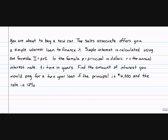You're about to buy a new car. The sales associate offers you a simple interest loan to finance it. Simple interest is calculated using the formula I equals PRT or P times R times T. In the formula, the P is the principal in dollars, R is the annual interest rate, and T is the time in years. Your annual interest rate is how much extra you're going to pay in interest. You can't just pay back the original loan you borrowed. You have to pay an extra amount of money called interest.